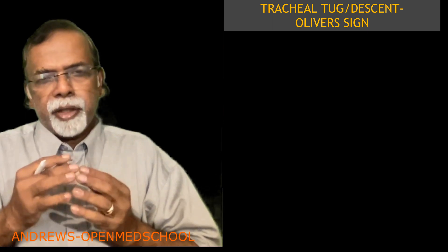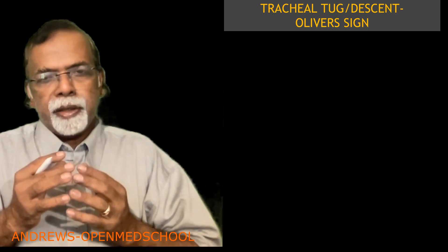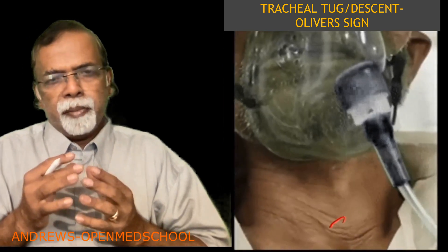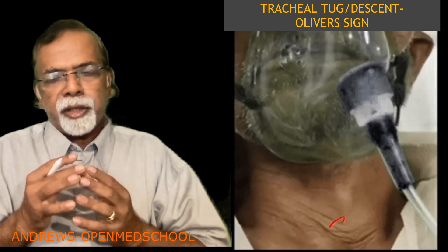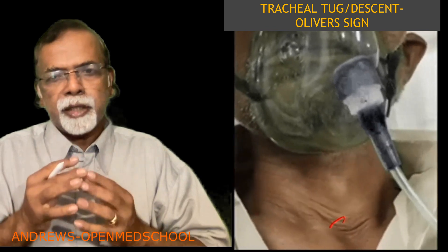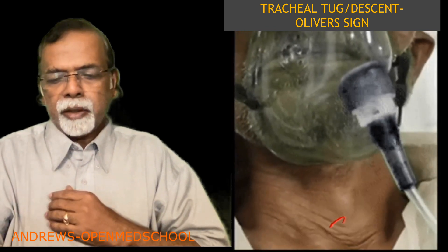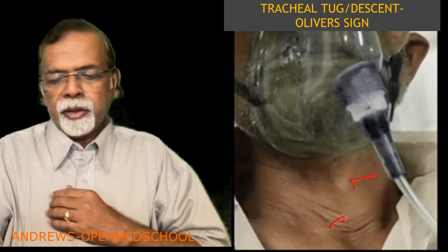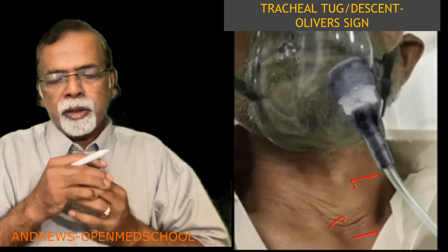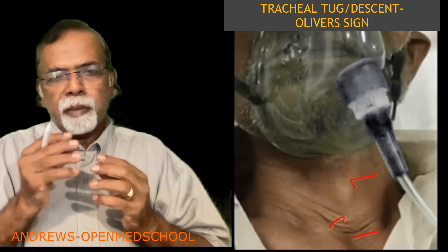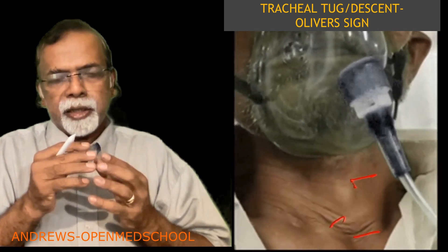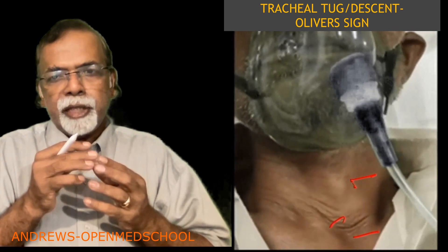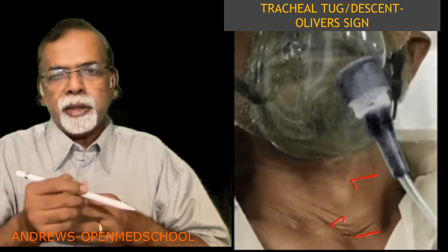Another finding that you can get in advanced hyperinflation like COPD is tracheal descent. Many people use it synonymously, but it is actually tracheal descent. In hyperinflation, as discussed last time, the cricosternal distance — that is the distance from the cricoid cartilage to the suprasternal notch — is usually around three finger breadths of the patient. If it is less than that, it means there is hyperinflation, and in such cases usually you will see that with each inspiration the trachea descends.